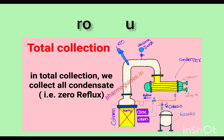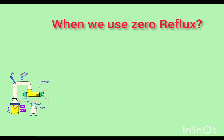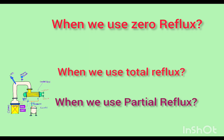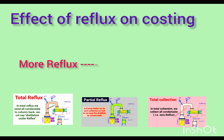So to recap: we now understand when we use zero reflux, when we use total reflux, and when we use partial reflux. Let's now discuss the effect of reflux on CAPEX and OPEX. In the case of total reflux, we need a larger column diameter and more energy for both heating and cooling. If we use total reflux for a long time — like two or three hours — we incur higher operating costs.